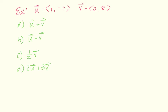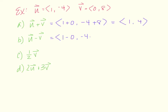Here's how you might use that. For vector u = (1, -4) and vector v = (0, 8): u plus v — add the x-coordinates: 1 plus 0, and add the y-coordinates: negative 4 plus 8, giving the vector (1, 4). For u minus v: 1 minus 0 and negative 4 minus 8, giving the vector (1, -12).